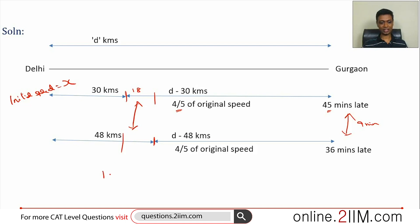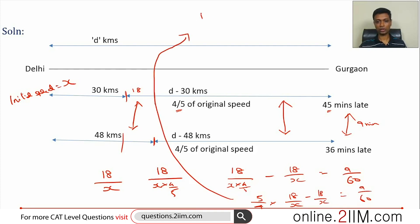The time taken in this case, this 18 kilometers would be 18 by x. In this case, it will be 18 by x into 4 by 5. This instant, the time taken is more, to the tune of 9 minutes. The equation we have is 18 by x into 4 by 5 minus 18 by x equals 9 by 60. We are dealing in hours. We are comparing these two contexts and isolating the 18 kilometer stretch where you would have been traveling at different speeds. 5 by 4 into 18 by x minus 18 by x equals 9 by 60. I want to just write this equation down here and then solve it. One fourth of 18 by x equals 9 by 60.